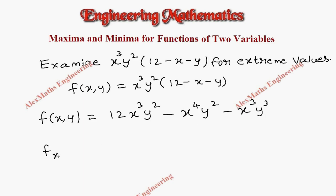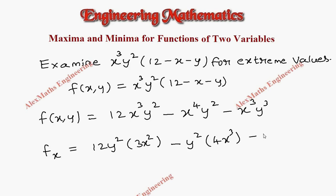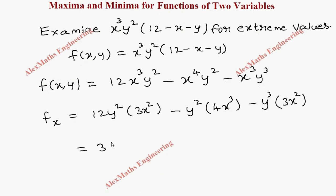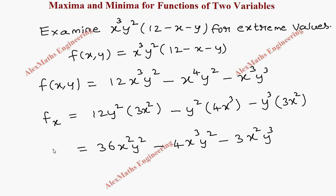The first step is to find the partial differentiation of this function with respect to x. Here 12y² is constant, differentiation of x³ is 3x²; y² is constant, differentiation of x⁴ is 4x³; y³ is constant, differentiation of x³ is 3x². Rearranging, fx = 36x²y² - 4x³y² - 3x²y³.